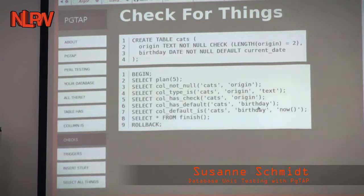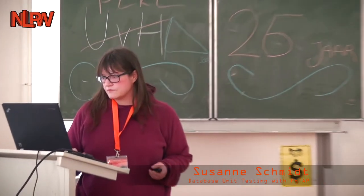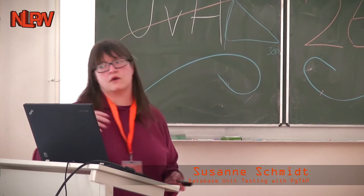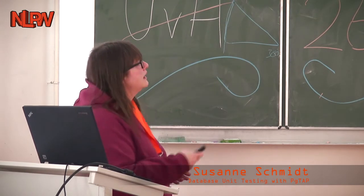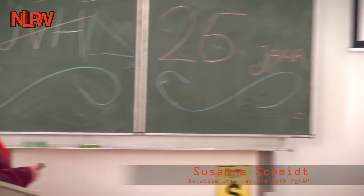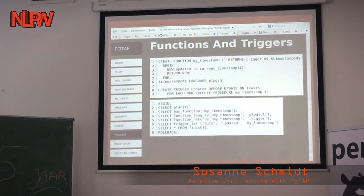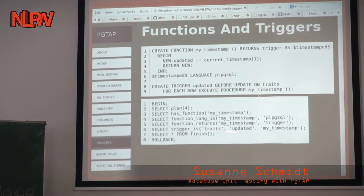When you run this, you get the usual TAP output or not, and then you can, of course, test triggers. Which are sometimes a combination of a function you can test and of a trigger, where you test if you've got the trigger assigned together with this function. So, this is the simplest thing I could come up with. You're creating a timestamp trigger and assign it to a specific table. So that every time a cat gets updated on its traits and characteristics, you create the usual updated information along with it.